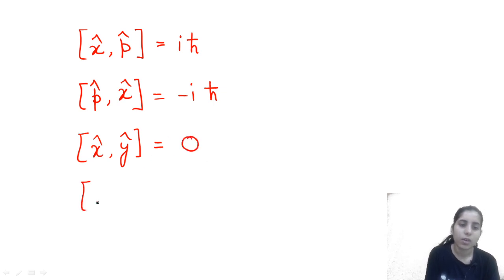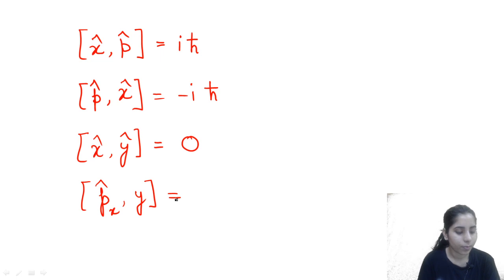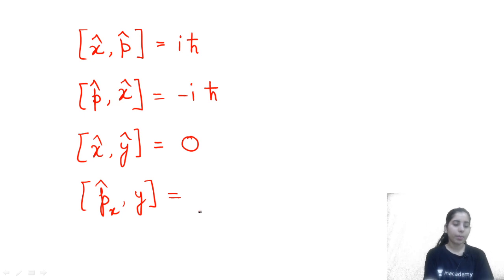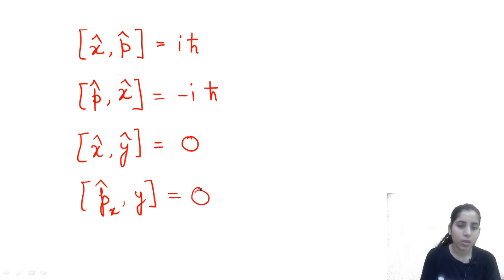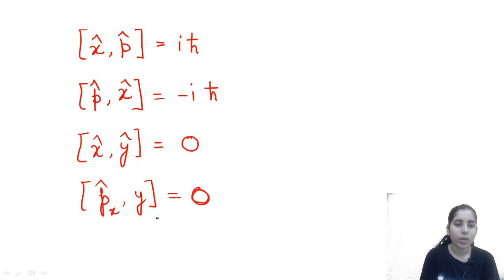Similarly, [P_X, Y]: the momentum X-component commutator with Y - if you solve it, you will get 0, because the X-component of momentum commutes with the Y position coordinate. Now you know all these standard terms.